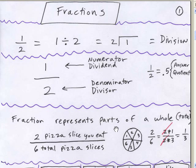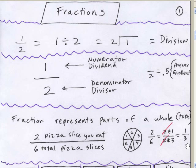A fraction represents parts of a whole or total. So if you eat two pieces of pizza and there's six total, as a fraction, what fraction of the pie did you eat? 2 divided by 6. Later we'll see how to break apart the top and bottom into prime factors, and if any are in both numerator and denominator, you can cancel them. We're left with 1 over 3 — you ate one-third of the pizza.